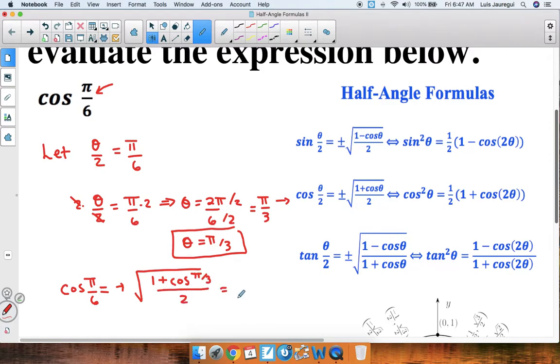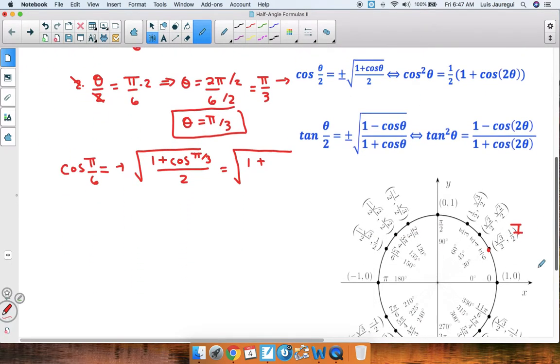Now we can rewrite this as follows: square root of 1 plus cosine of pi over 3. But cosine of pi over 3, after we look at our unit circle, happens to be associated with your x coordinate of 1 half.